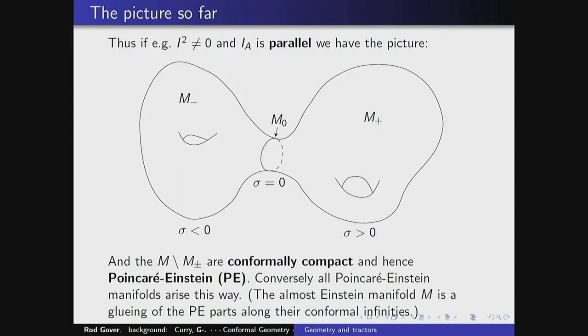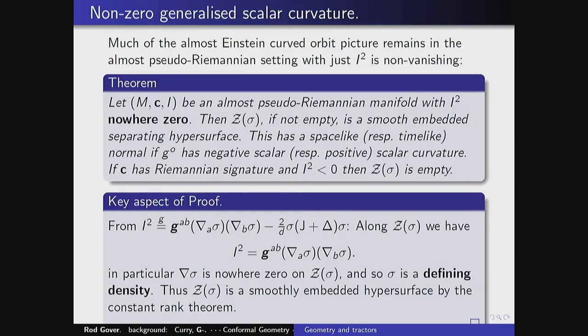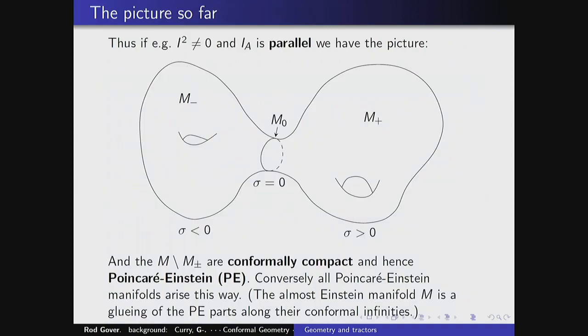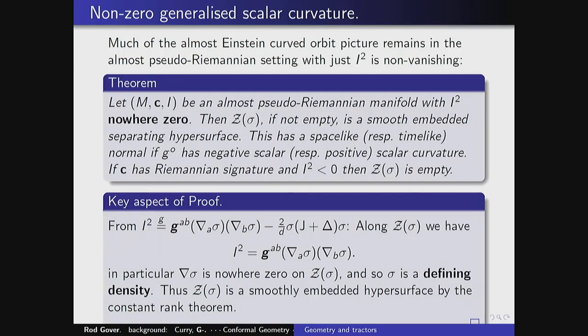If the tractor is parallel and the scalar curvature is nowhere zero, we have this picture: a closed manifold decomposes into two Poincaré–Einstein pieces. I² gives you a generalization of the scalar curvature. The key point I want to make is that a lot of this picture survives without I being parallel. So what I'm saying is that a lot of that survives if we just require the scale tractor squared to be nowhere vanishing — this is what I call almost pseudo-Riemannian.